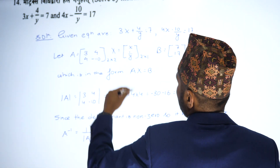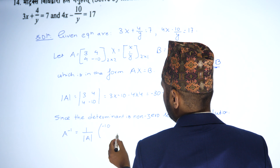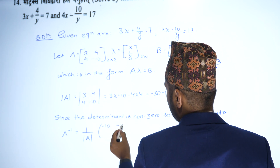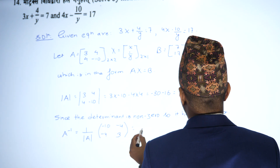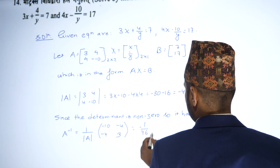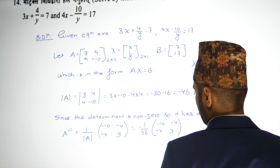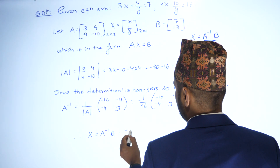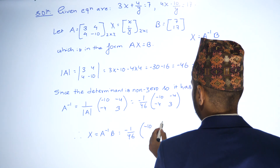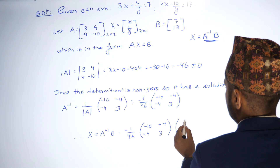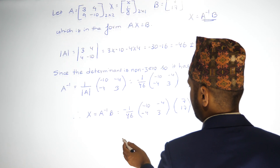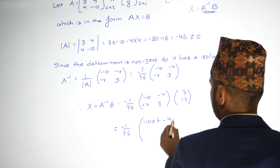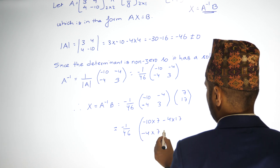First, for A inverse, we exchange the diagonal elements: 3 becomes minus 10 and minus 10 becomes 3, and the off-diagonal elements change sign: 4 becomes minus 4. So A inverse equals minus 1 by 46 times [-10, -4; -4, 3]. B equals [7; 17]. So X equals minus 1 by 46 multiplied by [(-10)(7) + (-4)(17); (-4)(7) + (3)(17)].